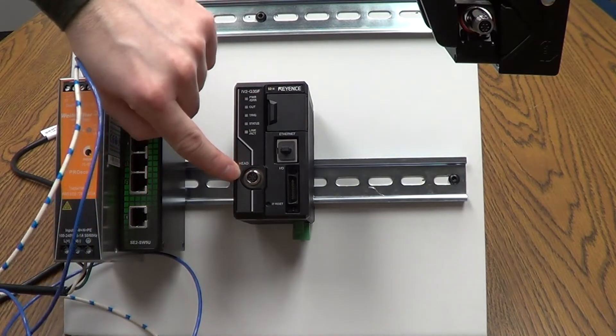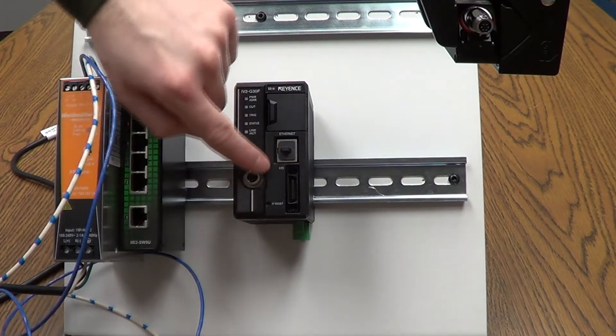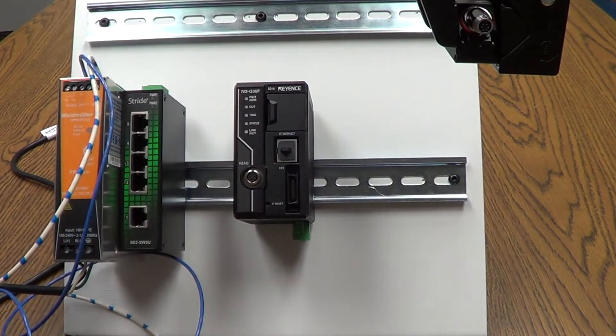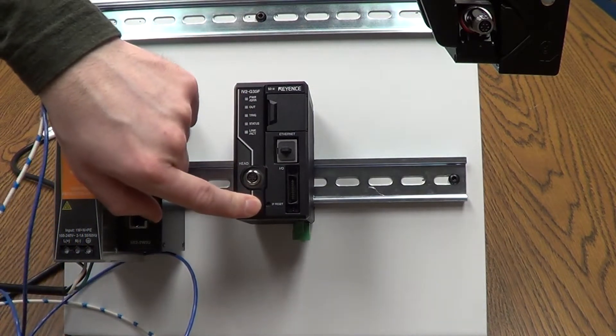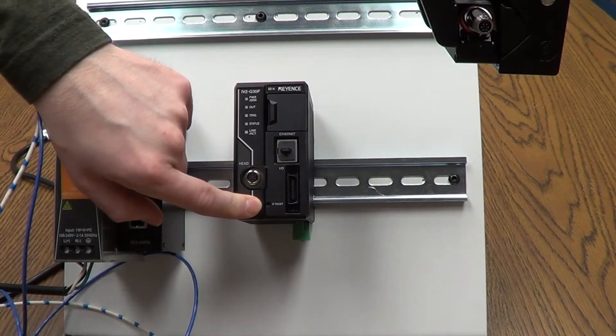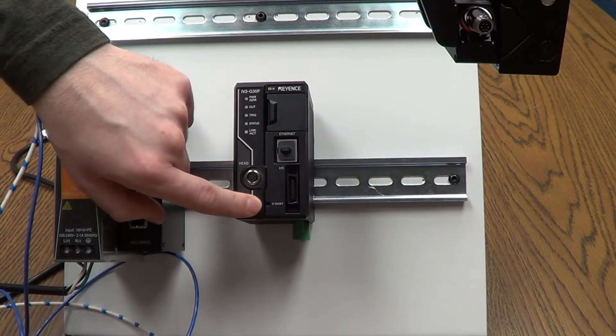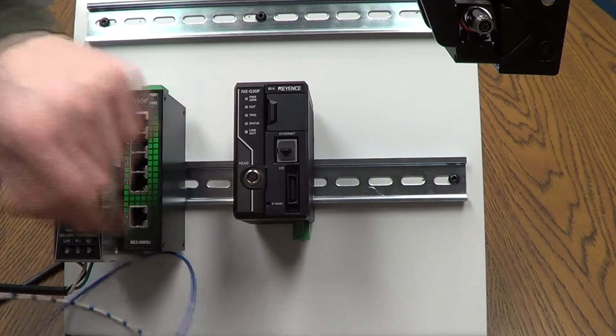Right here this little connector, that's going to be the head connector. And then you have an I.O. connection port right here where your I.O. ribbon cable goes into. If for some reason you need to set the controller back to the original IP factory settings, you hit this little button in here with a little paper clip, push that in.